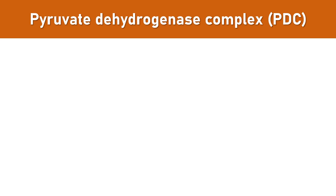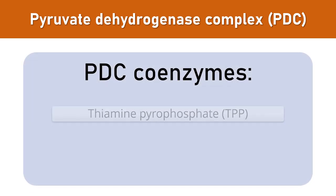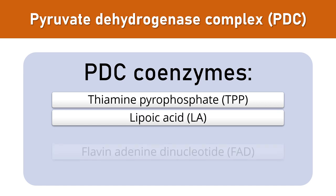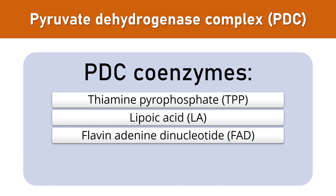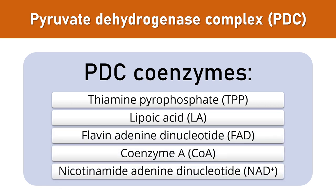The pyruvate dehydrogenase complex contains five coenzymes that act as carriers or oxidants for the intermediates of the reaction. These coenzymes are thiamine pyrophosphate, lipoic acid, flavin adenine dinucleotide (FAD), coenzyme A, and NAD.